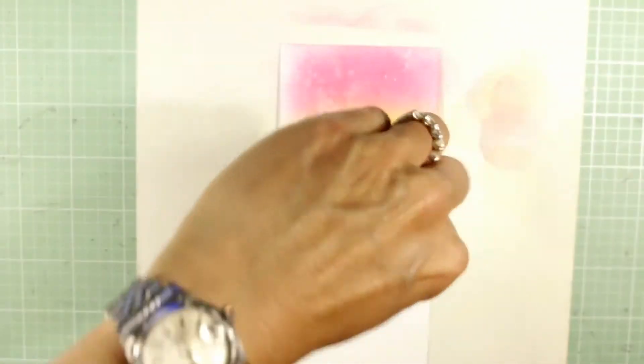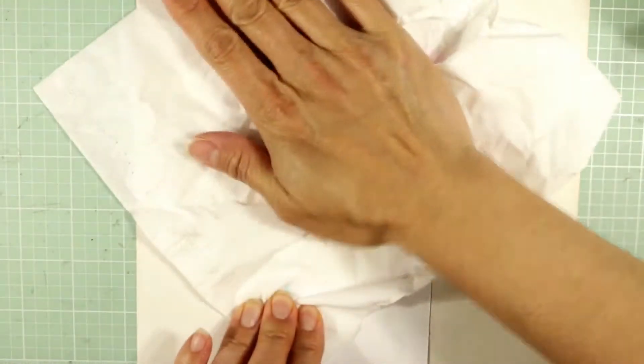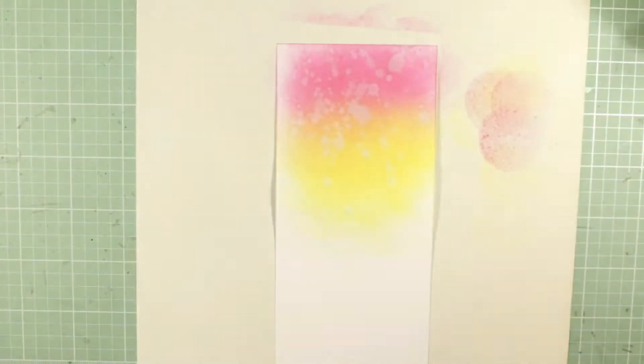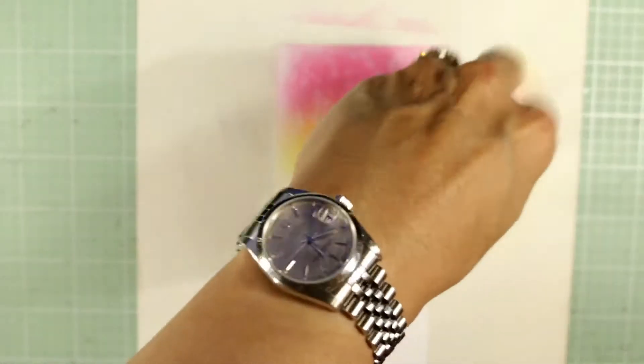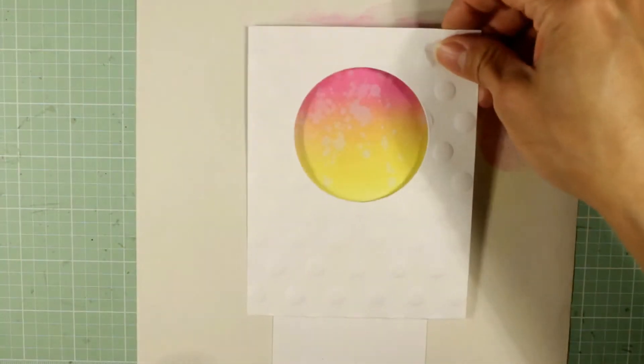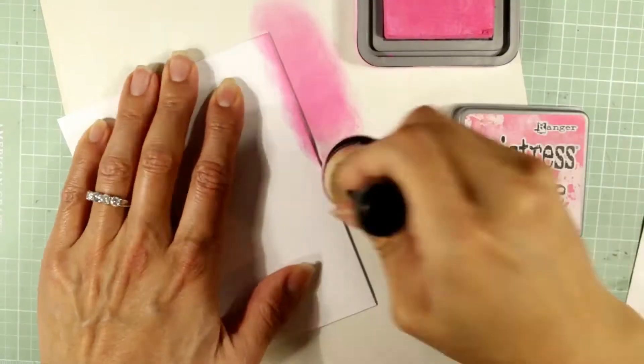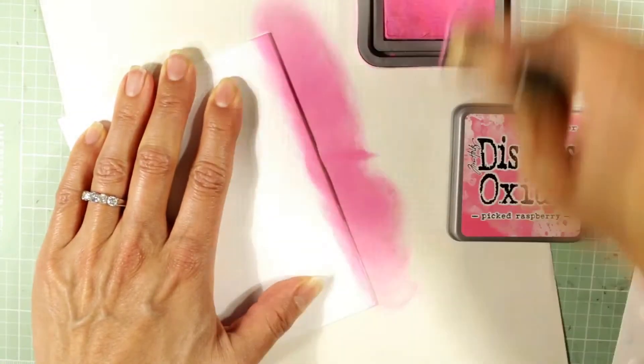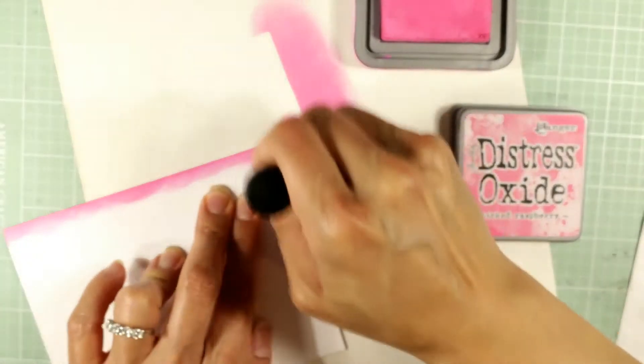Here I'm sprinkling on some Heidi Swapp Clear Color Shine for a little shimmer and sparkle on that background. That takes up the ink just like water would. Any kind of liquid does that. So I'm dabbing off the water with my tissue, and I'm just positioning that with the card front that I prepared off screen.